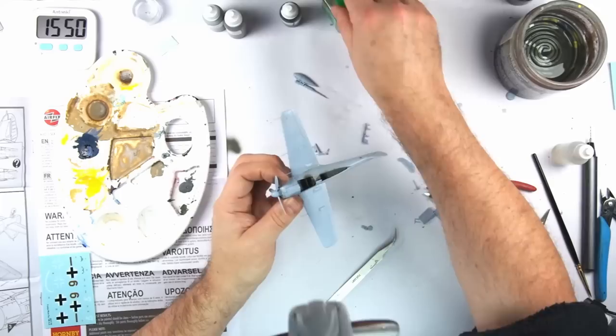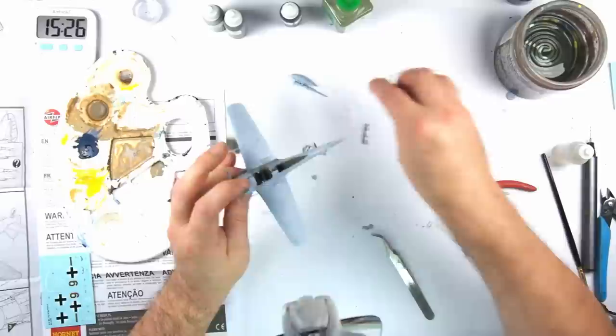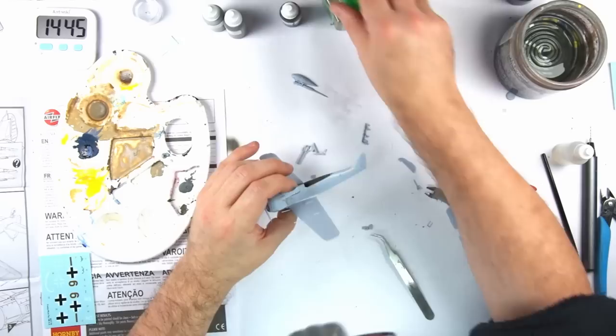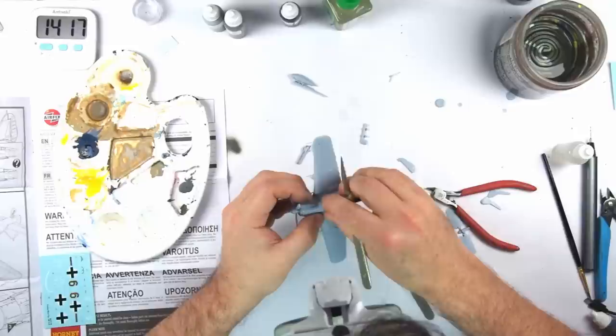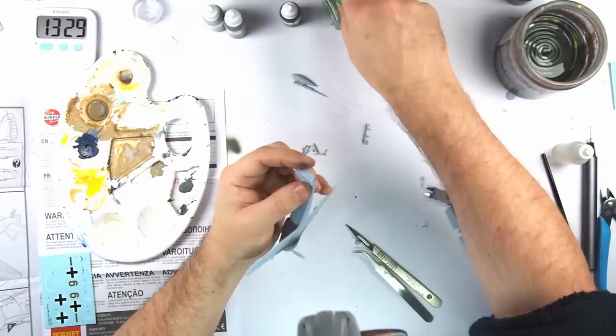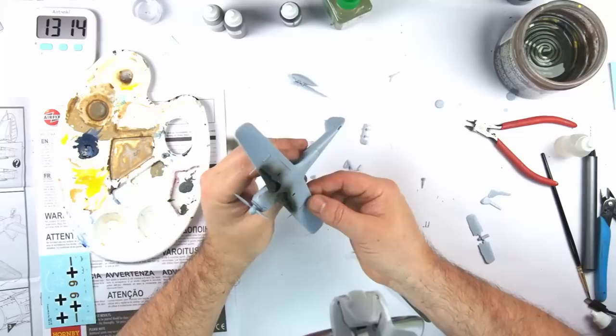Next up was the front engine assembly to help with holding the rather fragile front of the fuselage together. This was followed by the engine cowling which went on with no issues, but fitting the machine gun section of the fuselage was a bit more tricky and I spent a couple of minutes that I really couldn't afford at this point getting it to sit properly.